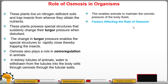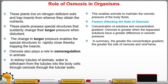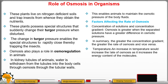Now we want to look at the factors that affect the rate of osmosis. The first is concentration of solution and concentration gradient — osmosis is greater when the separated solutions have a greater difference in osmotic pressure. In summary: the greater the concentration gradient, the greater the rate of osmosis; if the concentration gradient is low or small, then the rate of osmosis is also slow. The second factor is temperature.